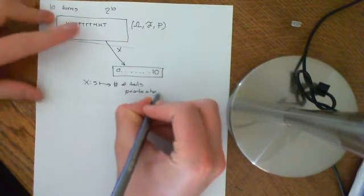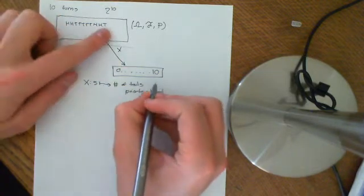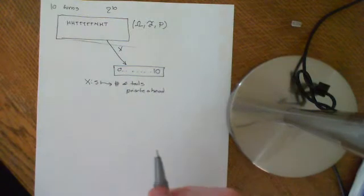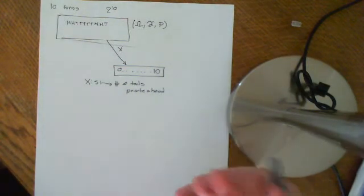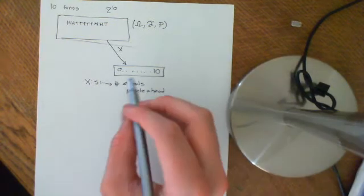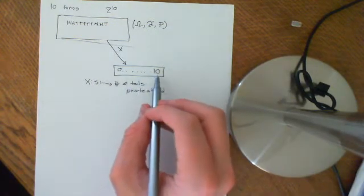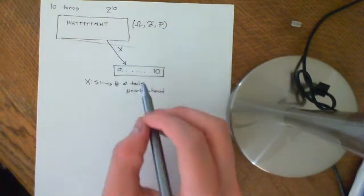This is consistent because if you get 10 tails prior to a head, we define that as X being 10. So you've got 10 tails before you've got a head. Let's work out what the probability of getting each of these values is.